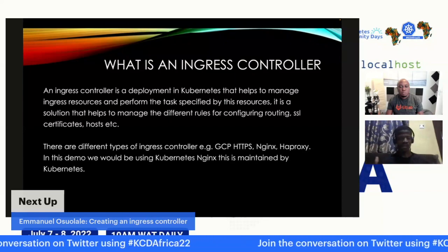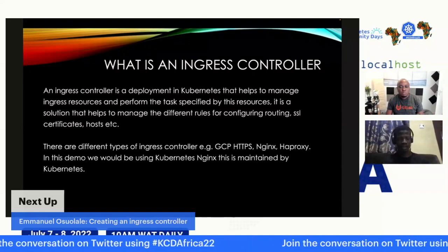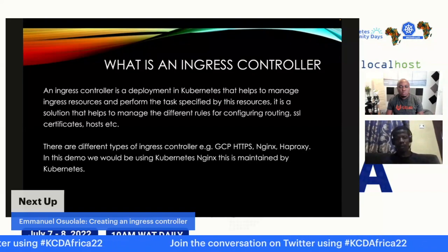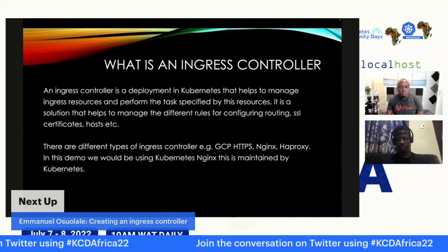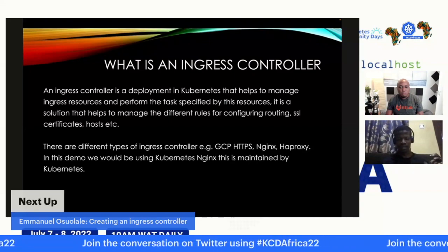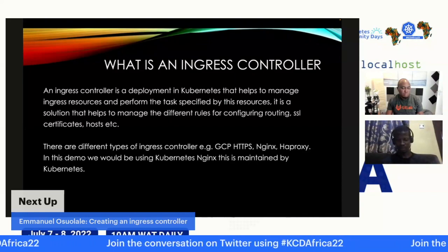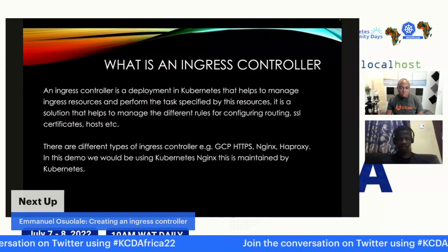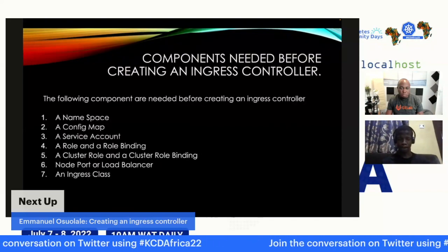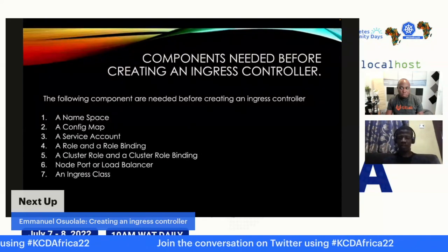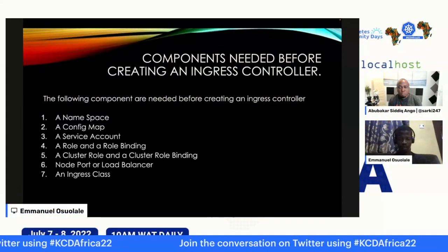It is a solution in Kubernetes that manages different flows like configuring SSL certificates and ports. There are different types of ingress controllers: there's the one by Google Cloud Platform, the Nginx ingress controller, and there's the HA Proxy. In this presentation, we're using the Kubernetes Nginx ingress controller. And to create an ingress controller, there are some components you are going to need.